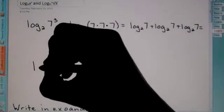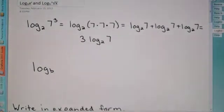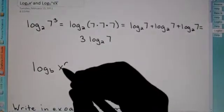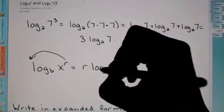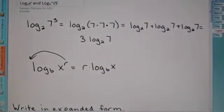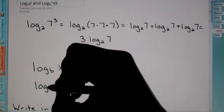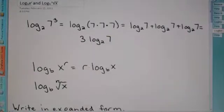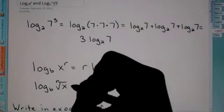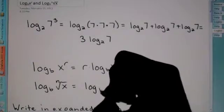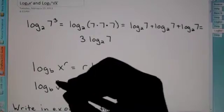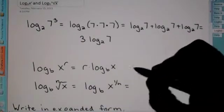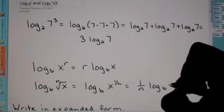So we can come up with a little identity here. If you have log base b of x to the r — some term to the exponent — we can rewrite that by bringing the exponent out front. So this becomes r times log base b of x. The other identity is if you have log base b of the nth root of x. Remember, you can rewrite a root as x to the 1 over n — the inside exponent is your numerator, the outside index becomes your denominator. Then we can move that out front: 1 over n times log base b of x.